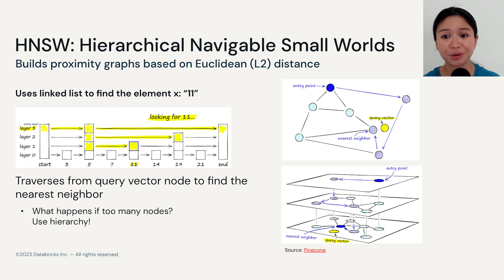But what if there are just way too many nodes needing us to build many layers? The answer is to introduce hierarchy. Let's look at the top right image. We begin at a predefined entry point, and then we traverse through the graph to find the local minimum where the vector is the closest to the query vector.